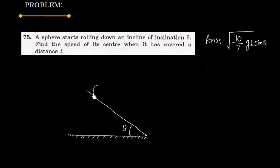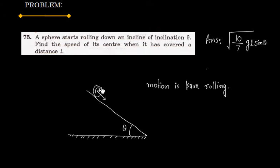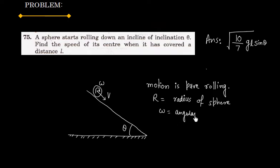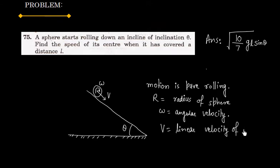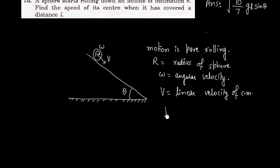A sphere is placed here and the question says it starts rolling — that is, the motion is a case of pure rolling. This means if angular velocity is omega and linear velocity is v, and r is the radius of the sphere, then in case of pure rolling we will have v is equal to r omega. This is the condition for pure rolling.